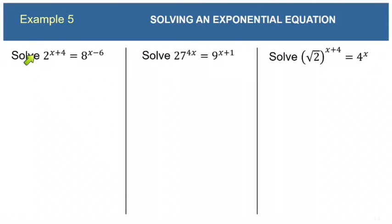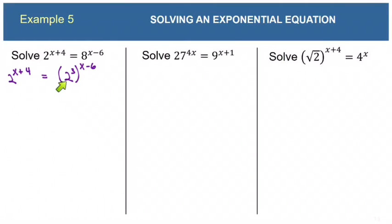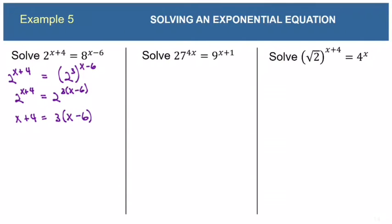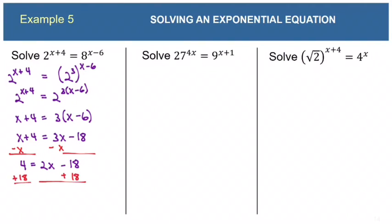Example 5: 2^(x+4) = 8^(x-6). The base 8 on the right can be written as 2^3. So we have 2^(x+4) = (2^3)^(x-6). Using the power rule, the right side becomes 2^(3(x-6)). Since the bases are the same, we set exponents equal: x + 4 = 3(x - 6). Distributing: x + 4 = 3x - 18. Subtracting x and adding 18 to both sides: 22 = 2x. Dividing by 2 gives x = 11.